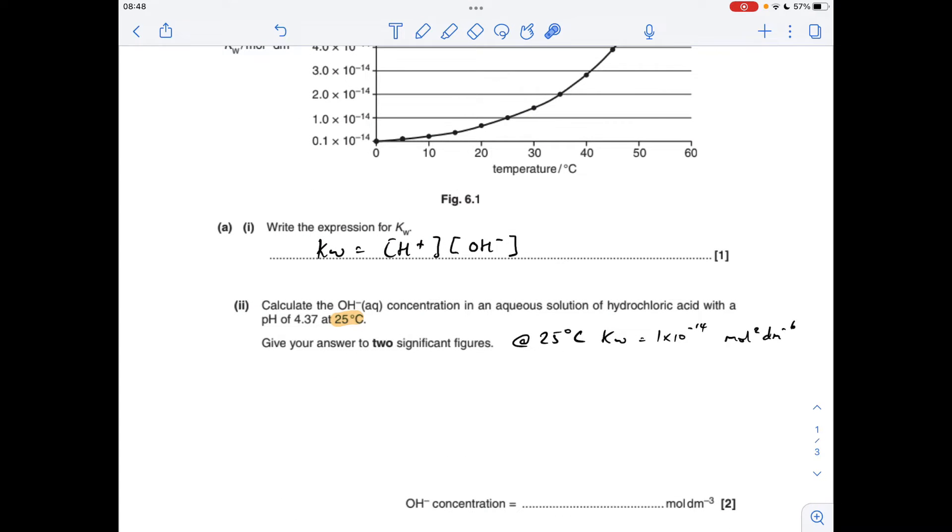Moving on to the calculation, we've got to calculate the hydroxide ion concentration in an aqueous solution of hydrochloric acid with this pH and at that temperature. So you can see I've written up there, at 25 degrees C, Kw has this value, 1 times 10 to the minus 14.